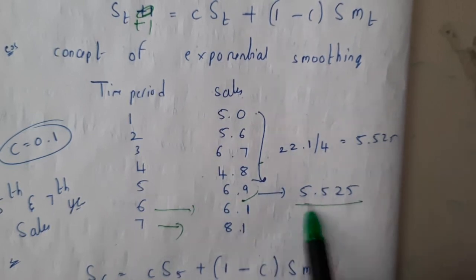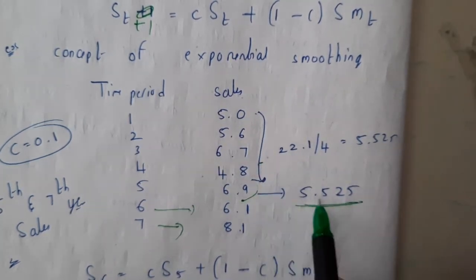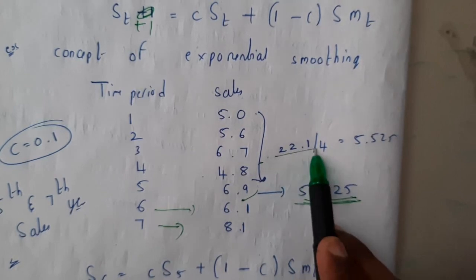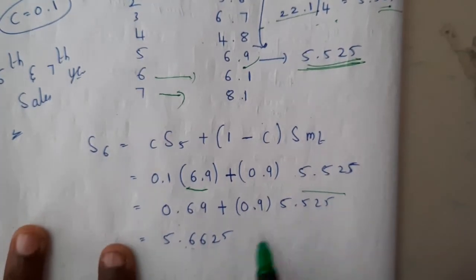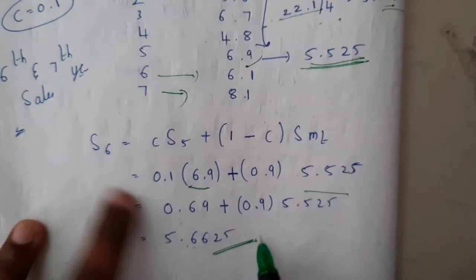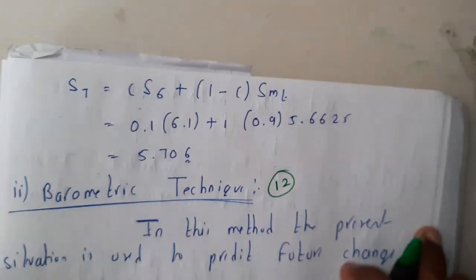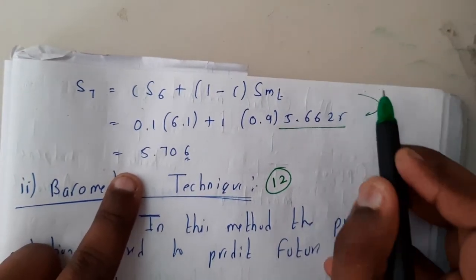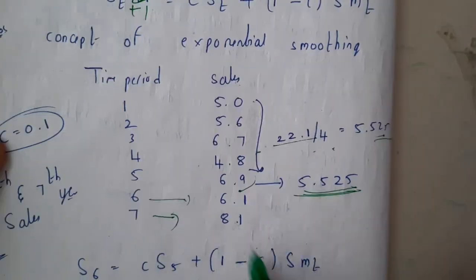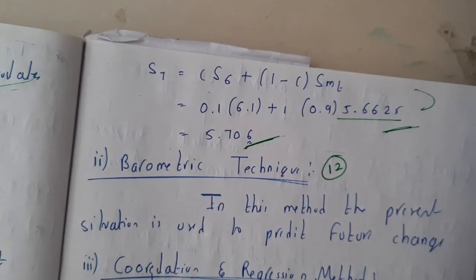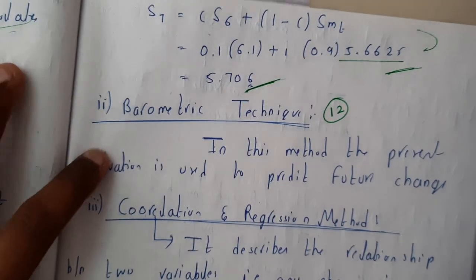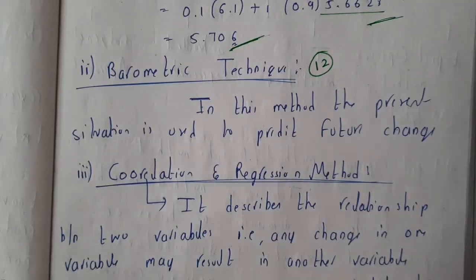After computing all the averages, S_mt = 22.1 ÷ 4 = 5.525. Substituting gives the value for year 6. For year 7, substitute S6 = 6.1 and S_mt = 5.525 to get the year 7 forecast. In this way, the statistical method works. In the next lecture, we'll discuss the other three methods in the statistical method. Thank you for watching.